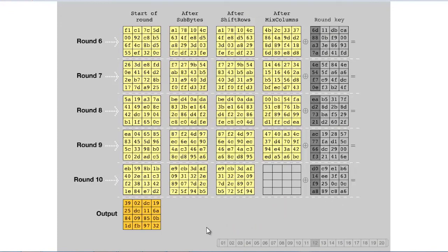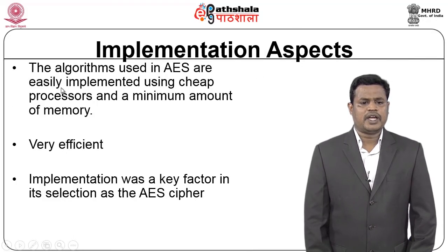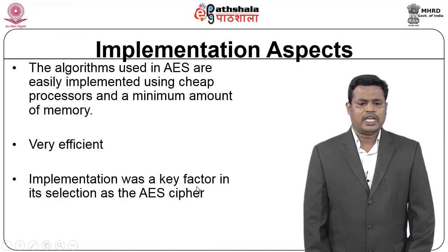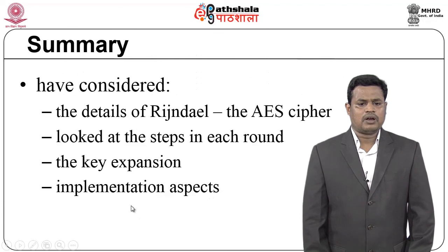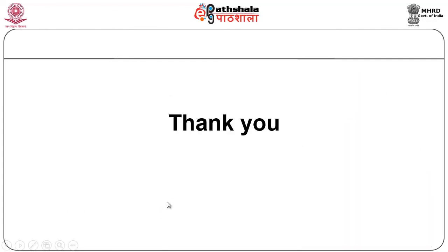We can now understand how each step happens inside AES with the help of this animation. The implementation aspect: algorithms used in AES are easily implemented using cheap processors with a minimum amount of memory — very efficient implementation was a key factor in the selection of AES. In conclusion, we have detailed the Rijndahl algorithm, the state of each round, key expansion, and implementation aspects. Thank you.